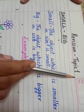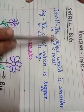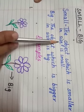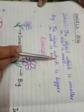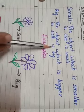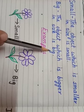Revision Topic 1: Small and Big. Small means the object which is smaller in size is small. Big means the object which is bigger in size is big. Small means chota, big means bada. Few examples.